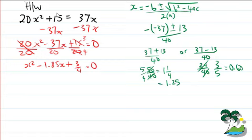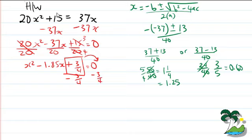When completing the square, we move the constant to the other side, because it's really difficult to find what times what would equal that. We subtract 3/4 from both sides, giving us x² minus 1.85x equals negative 3/4.